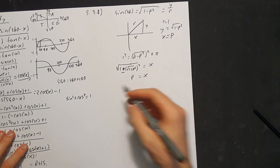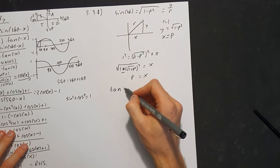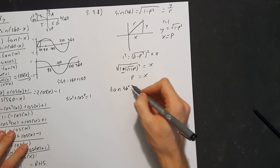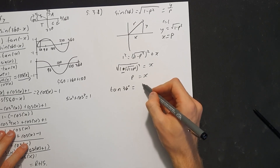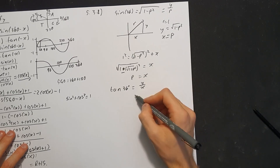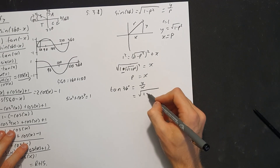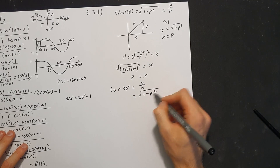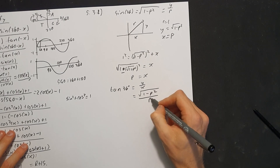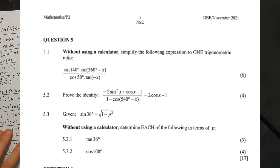So for tan of 36: tan equals y over x, which gives the square root of (1 minus p squared) over p.